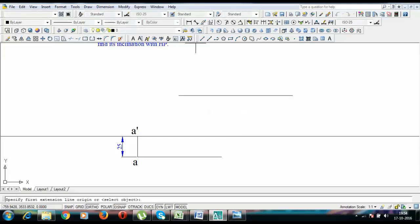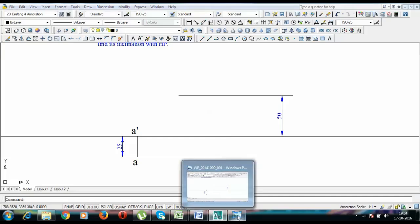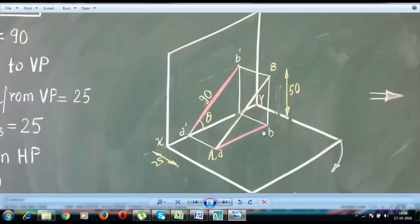So this line over here is at a height of 50mm. And the true length of this line can only be seen from the front. So what I'll do is with A dash as center, I'll put an arc over here, a 90mm arc.